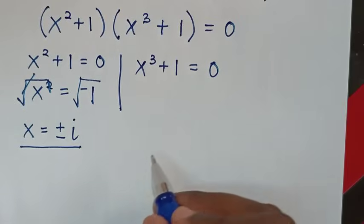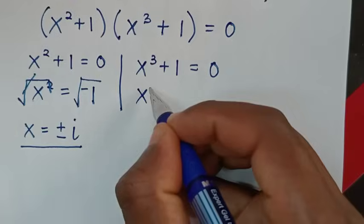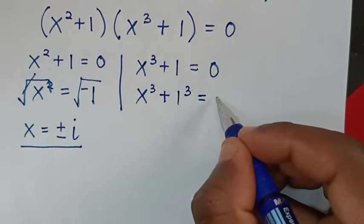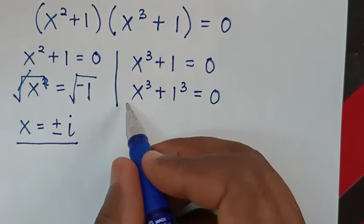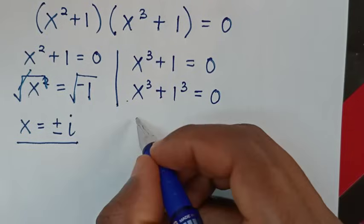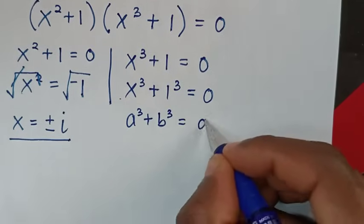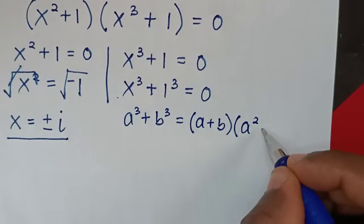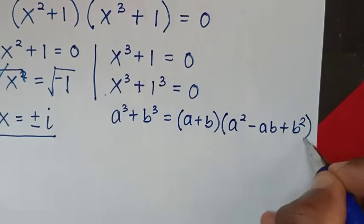To continue solving from the second equation, x power 3 plus 1 is the same as x power 3 plus 1 power 3 equal to 0. From here on the left side we'll apply an algebraic rule in the form a power 3 plus b power 3, which is equal to a plus b, bracket a squared minus ab plus b squared.